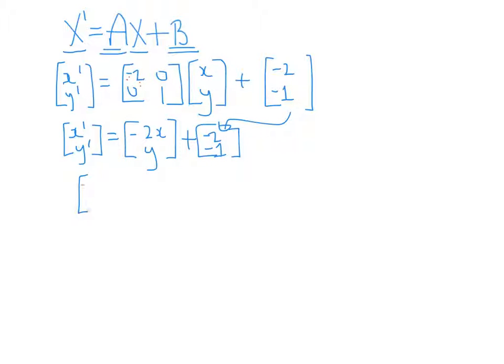Now, if I put all these together minus 2x minus 2 and y minus 1. Now let's see that could mean that we have minus 2x minus 2 and y minus 1.